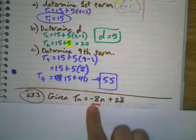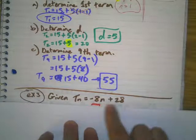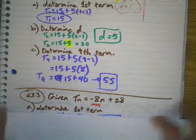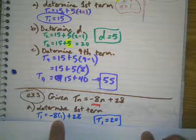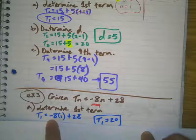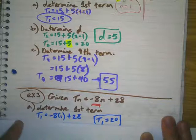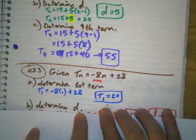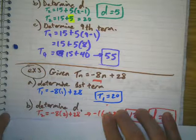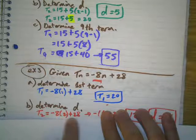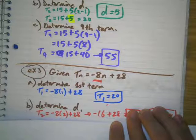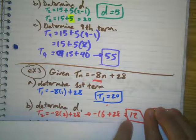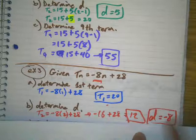Given t sub n equals negative 8n plus 28. If I want to find the first term, I plug in 1 in place of n. So negative 8 times 1 plus 28 gives me negative 8 plus 28, which is 20. To determine d, I find the second term by plugging in 2 for n: negative 16 plus 28 gives me 12. The difference between 20 and 12 is negative 8, so d is negative 8.